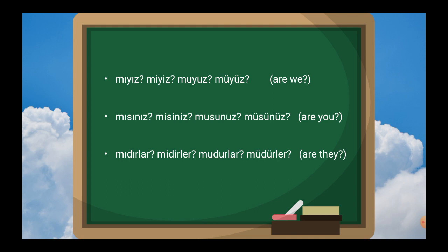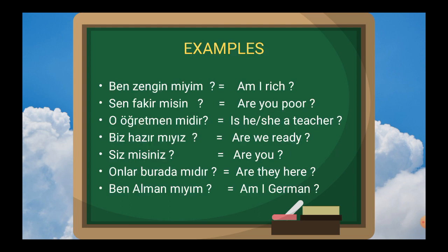Let's look at some examples about question verb to be in Turkish. Ben zengin miyim? — Am I rich? Sen fakir misin? — Are you poor? O öğretmen midir? — Is he or she a teacher? Biz hazır mıyız? — Are we ready? Siz misiniz? — Are you? Onlar burada mıdır? — Are they here? Ben alman mıyım? — Am I German?